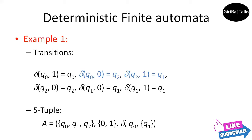Finally, we design transitions for state q1. In this state, we have already seen a 0,1 sequence, so regardless of what happens, we remain in a situation where we have seen 0,1. That is, delta of q1 comma 0 equals delta of q1 comma 1 equals q1. Therefore, Q equals {q0, q1, q2}, q0 is the start state, and the only accepting state is q1, so capital F equals {q1}.